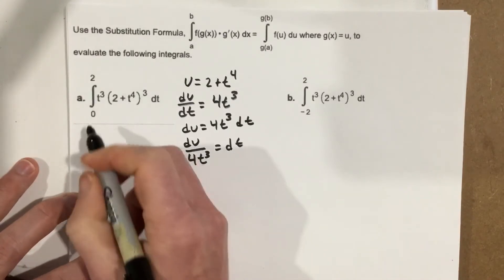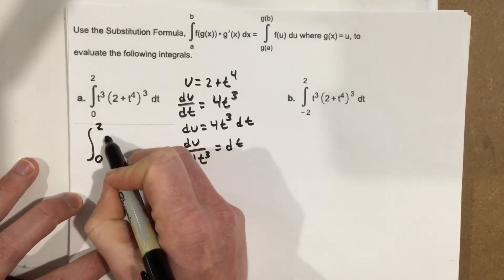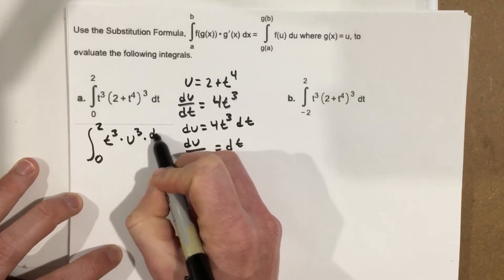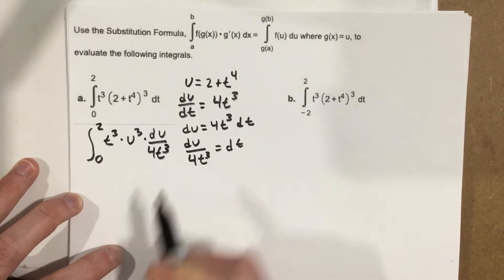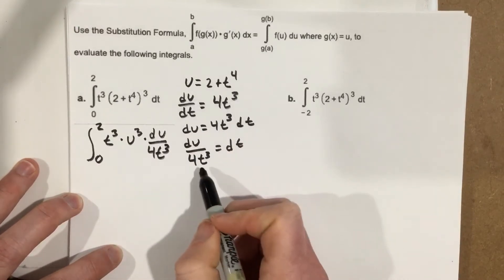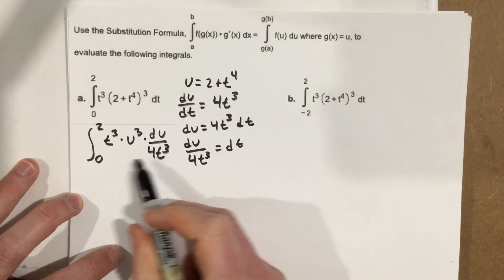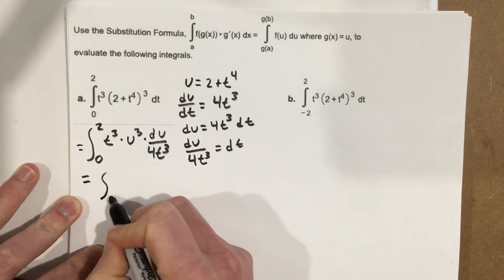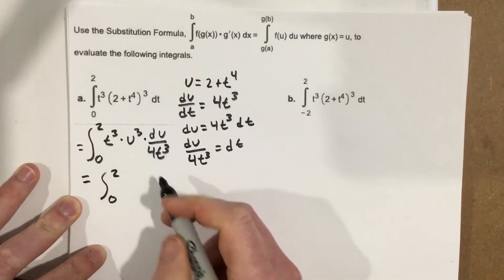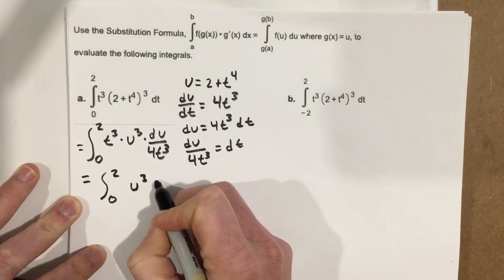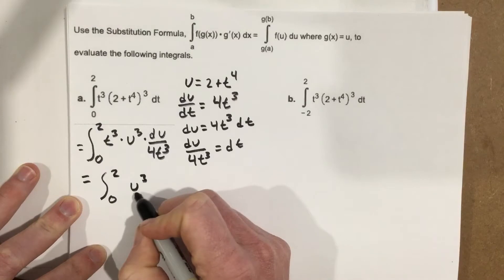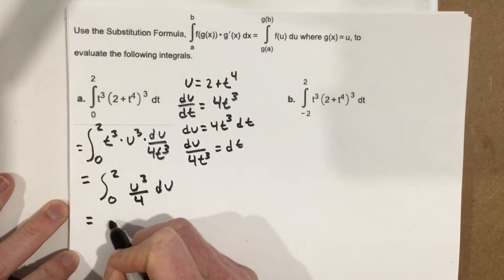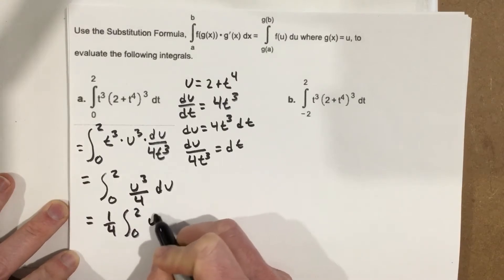So we can say that we're evaluating the integral from 0 to 2, t cubed times u cubed, and then times du over 4t cubed, when we substitute everything in. So we substitute u for the 2 plus t to the 4th, we substitute du over 4t cubed for dt, and you can see the t cubes are going to cancel here. So we're going to end up with the integral from 0 to 2 of, when we cancel out those t cubes, you end up with u to the 3rd over 4 du, and then I can actually write that as 1 4th, bring the 4 out, so 1 4th, the integral 0 to 2, u cubed du.